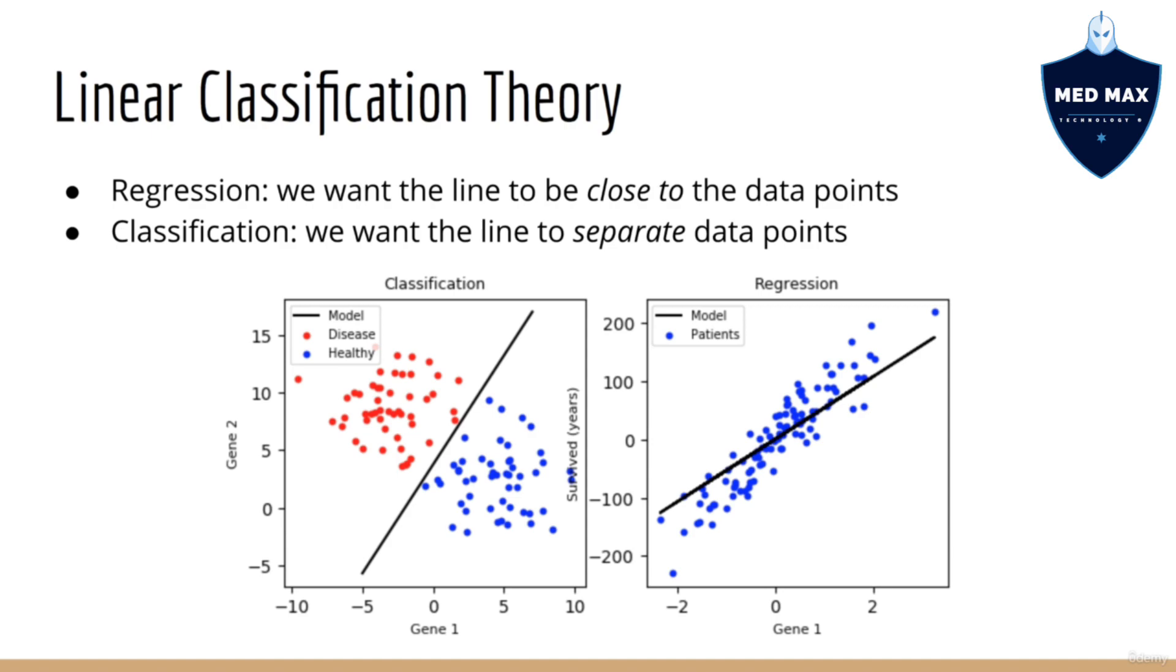Because this is linear classification analogous to linear regression, our model is still a line. It's just that the job that we want this line to do is different from regression. Unlike regression, we don't care if this line is close to the data points. Instead, we want the line to separate data points of different classes. In other words, if one class consists of the red dots and one class consists of the blue dots, then we want all the red dots to be on one side of the line, and we want all the blue dots to be on the other side of the line.